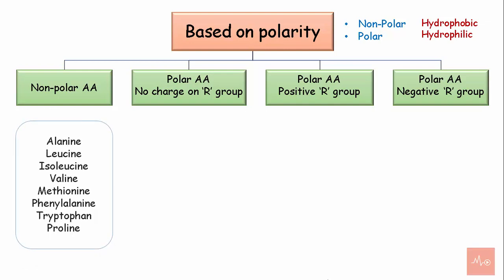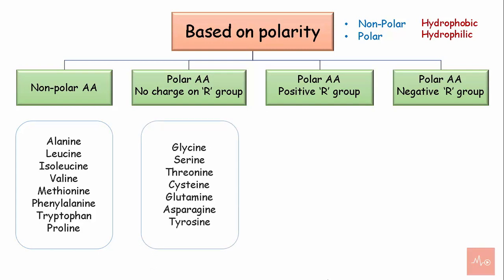The nonpolar amino acids are alanine, leucine, isoleucine, valine, methionine, phenylalanine, tryptophan, and proline. The polar amino acids with no charge are glycine, serine, threonine, cysteine, glutamine, asparagine, and tyrosine.